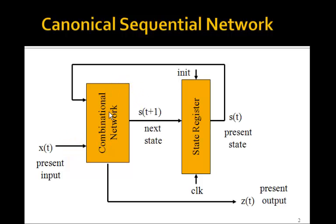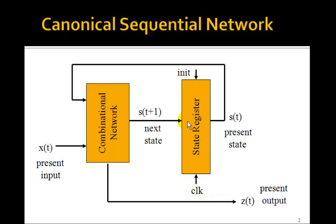Out of this combinational network comes the present output Z and the next state S, which is the input to the state registers. You can think of it as being the input to these D flip-flops, so that on the rising edge of the clock, the present state gets the next state.